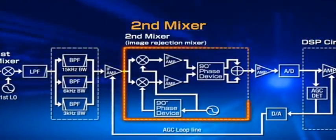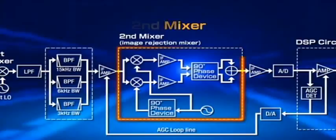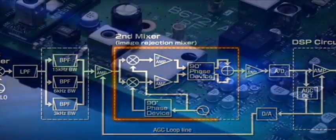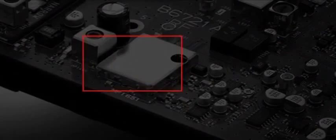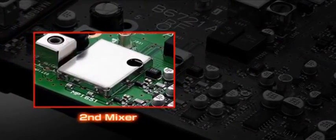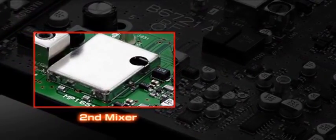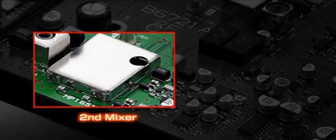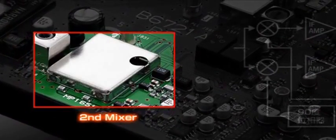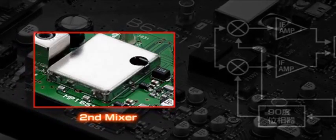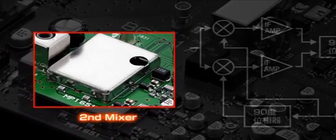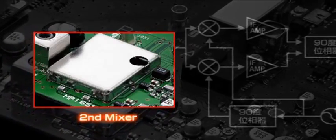The image rejection mixer for the second stage rejects image spurious through IF processing. In conjunction with the roofing filters, rejection characteristics of more than 100 dB can be realized. The result of the stable operation of the analog image rejection mixer makes it possible to design a simplified receiver circuit and improve the distortion-free performance of the receiver.